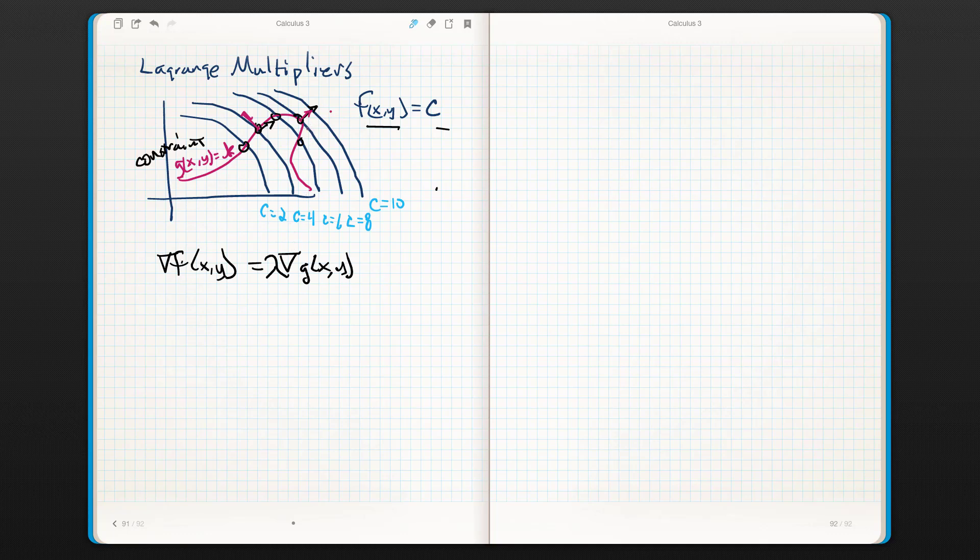Notice that I did not make them the same length because there's no guarantee that they're going to be the same length. Lambda may be one, but there's no guarantee. So what we simply say is we can multiply the gradient of g by a scalar. We don't know what that scalar is yet. That will make it equal to the gradient vector of f. And what this gives us very cleverly is a simple way to algebraically solve for critical points.